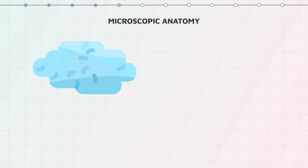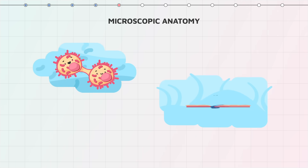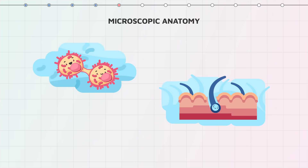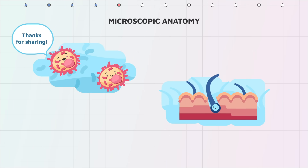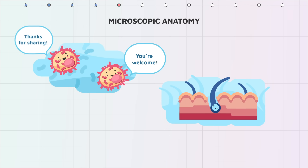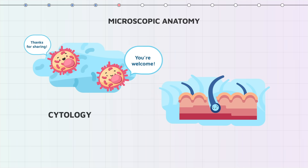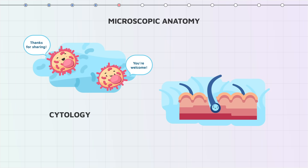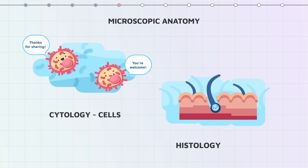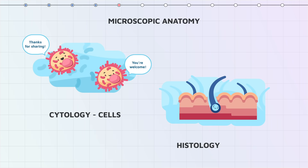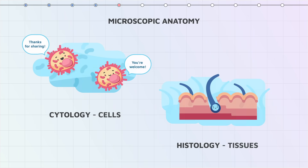Microscopic anatomy deals with small structures invisible to the naked eye. It can also be divided into cytology, the science which studies cells, and histology, the science which studies tissues.